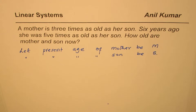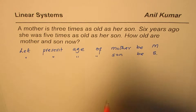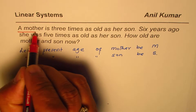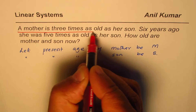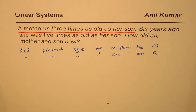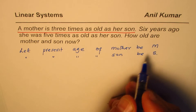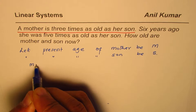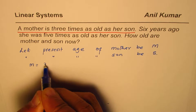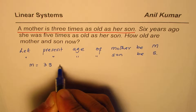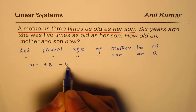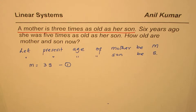Now we'll write down the equations based on the statements. The first statement is: a mother is three times as old as her son. For present age, the relation is m equals three times s. That is equation number one — that is how the present ages are related.